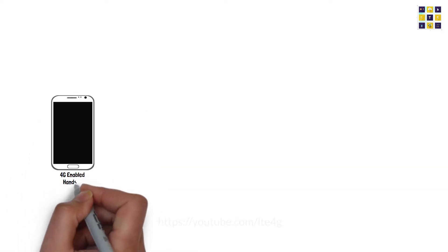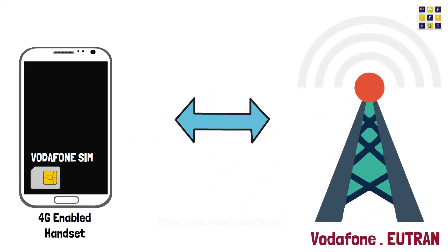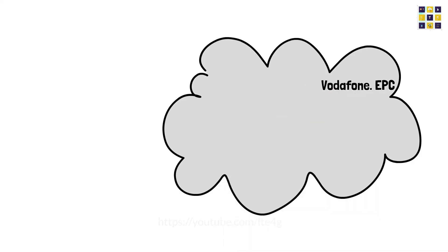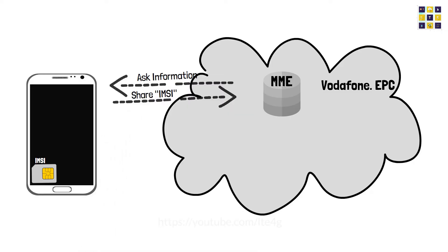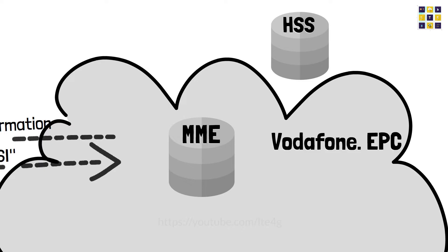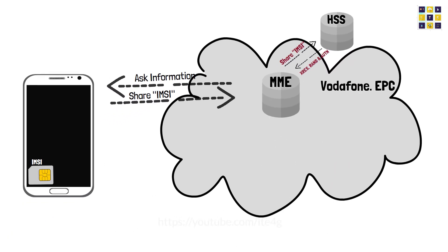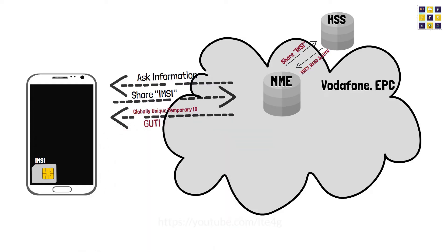Now let's compare Ross's aeroplane travel with any user with a 4G enabled handset who wants to latch to the network to use the services. The information in the SIM card will help the user to connect to the correct service provider because others are also providing similar services. Similar to the officer at the counter, the MME will ask for identifiers from the user. Once the identifiers are provided, the MME starts the authentication of the user by using authenticating details from the Home Subscriber Server or HSS such as XRES, RAND, and AUTN. At the end of the authentication process, the user is assigned a Globally Unique Temporary ID or GUTI.